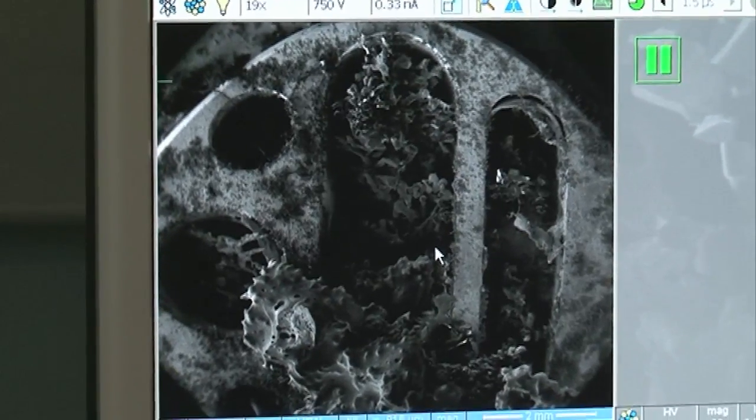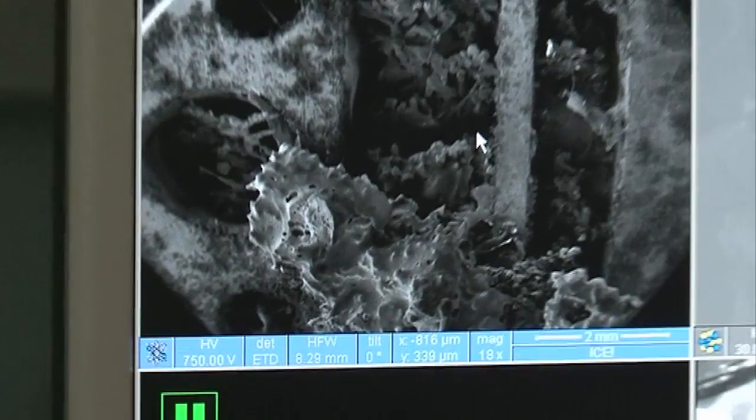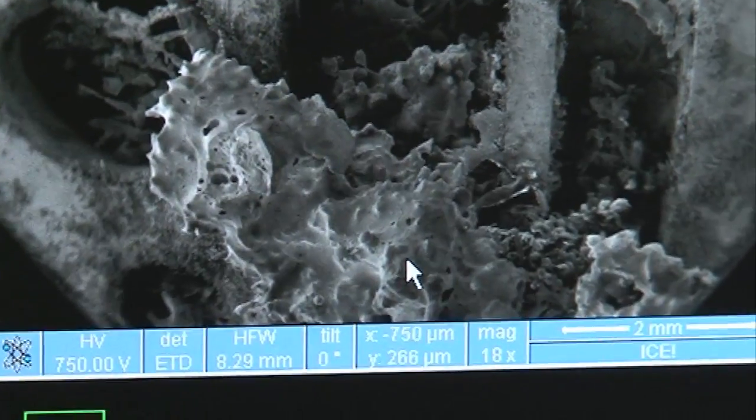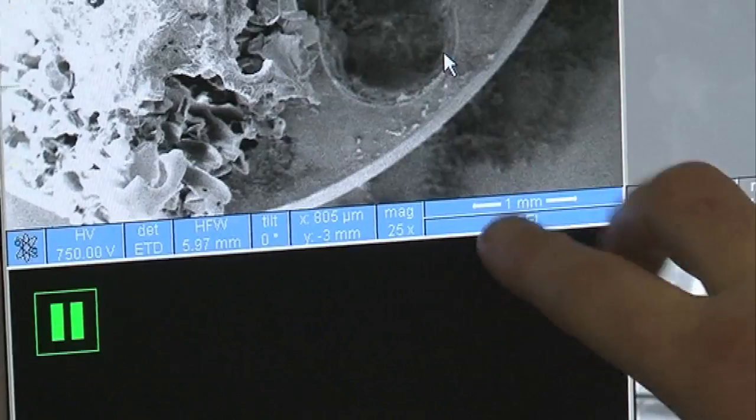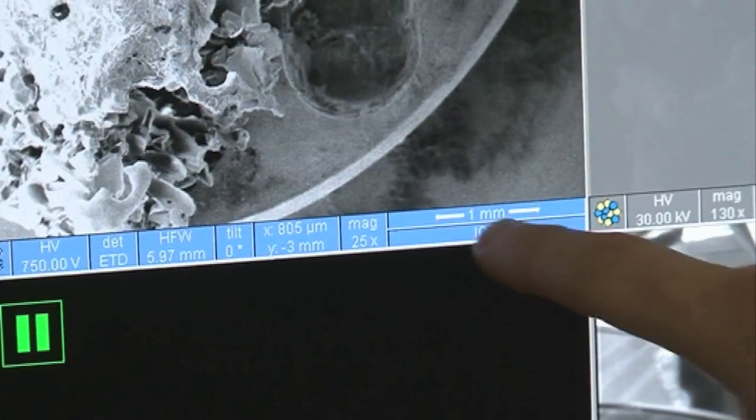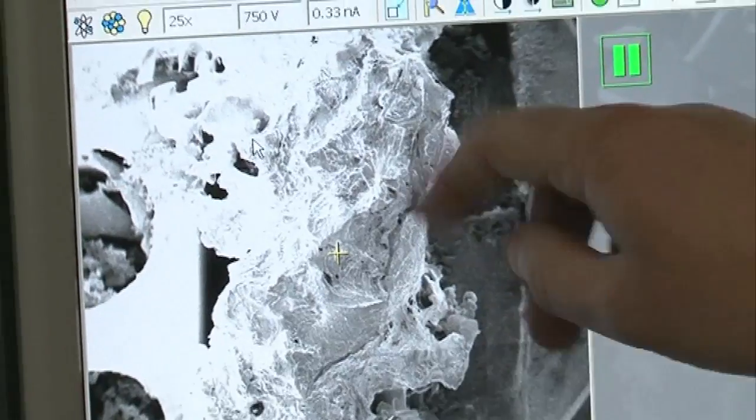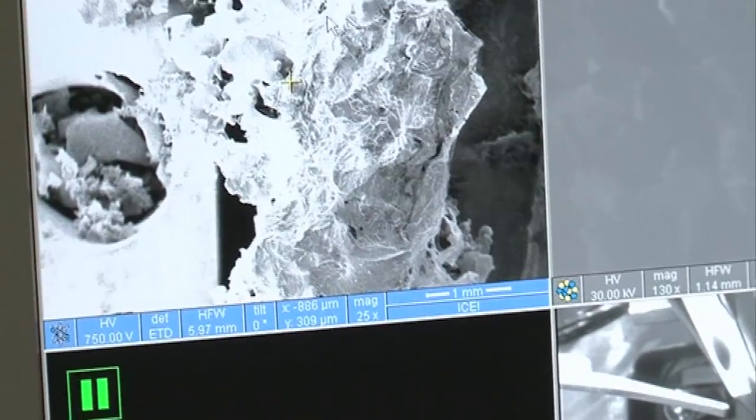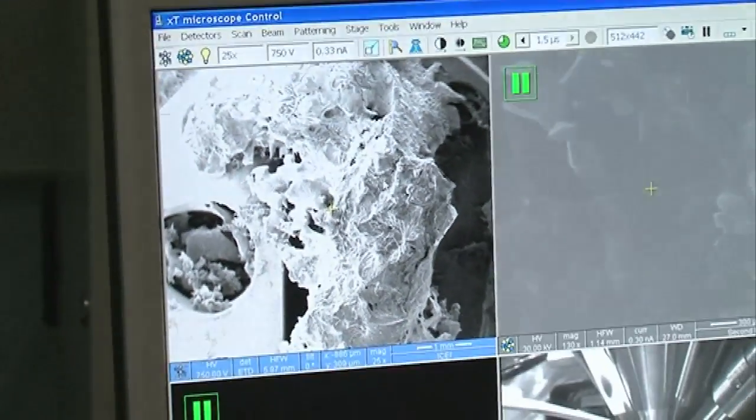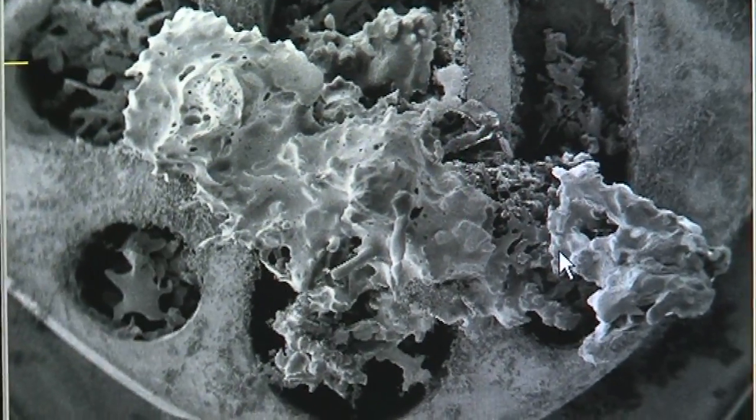What Chris is doing here is progressively zooming in to look at the structure of this snow sample that he's put in here. This particular bar is at the moment, you can see it keeps changing, it's a millimeter across. So that gives you an idea of the scale that we've got here. Now Chris is going to keep moving in, zooming in, zooming in, looking for interesting regions.